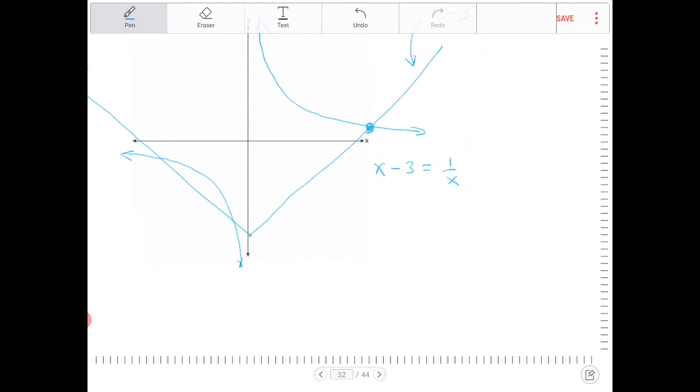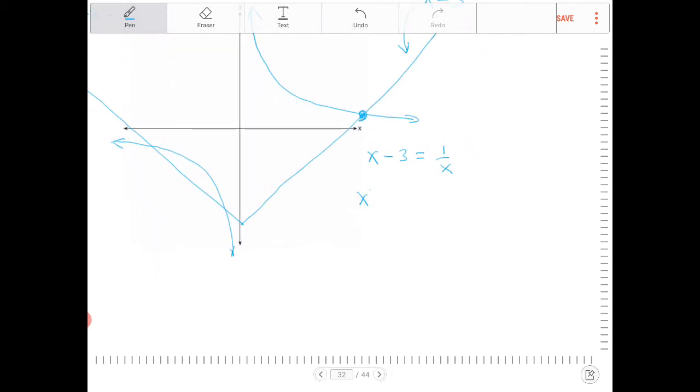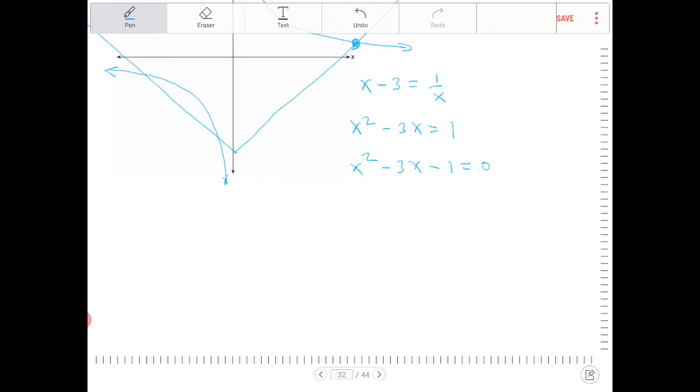I'm going to multiply both sides by x. So I get x squared minus 3x equals 1. I will now subtract 1 from both sides. And I'm almost done.